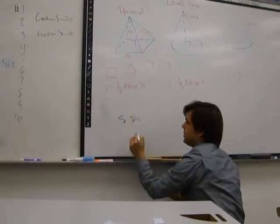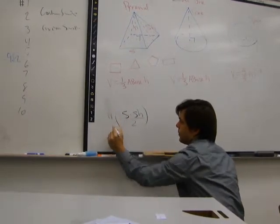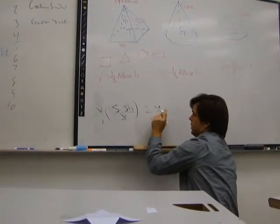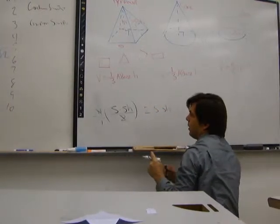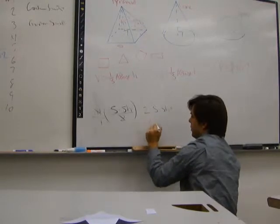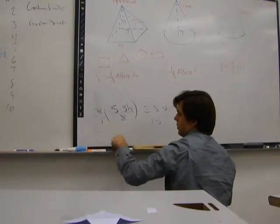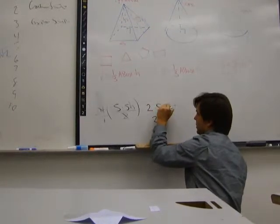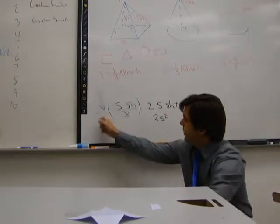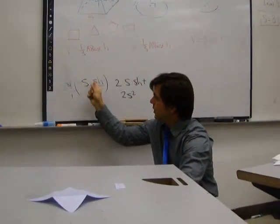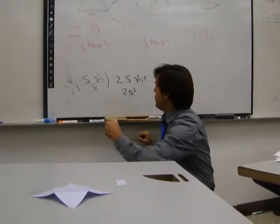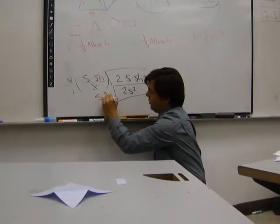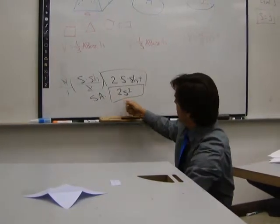It's base times height, divided by two, and there's four of them. So that crosses out, and you get that. In other words, it's two times the side length times the slant height, plus S squared for the area of the base. The reason for that is that it's four triangles. This is the base of the triangle, this is the height of the triangle. Four and the two cross out to make a two in the numerator. And this is your full surface area formula for a pyramid.